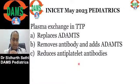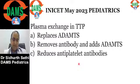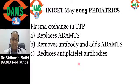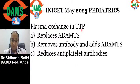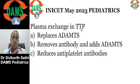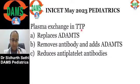As a nephrologist who deals with plasmapheresis, I discuss hemolytic uremic syndrome and TTP in class. TTP is a pentad — HUS is a triad. In addition to the triad, TTP has two more features: fever and neurological symptoms.